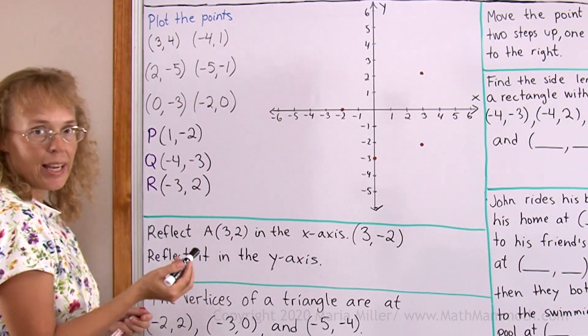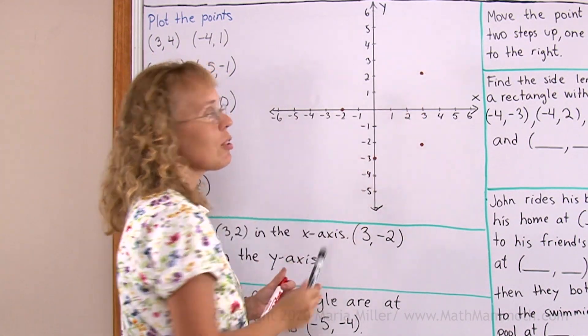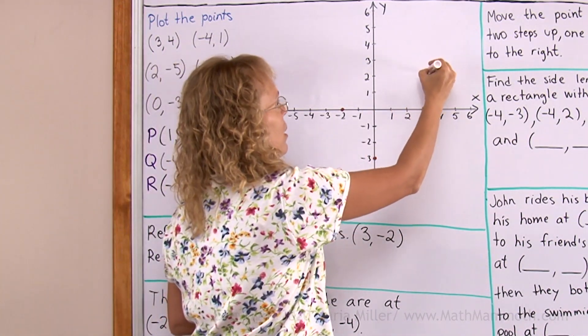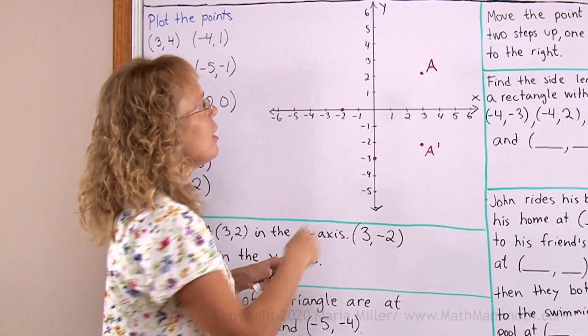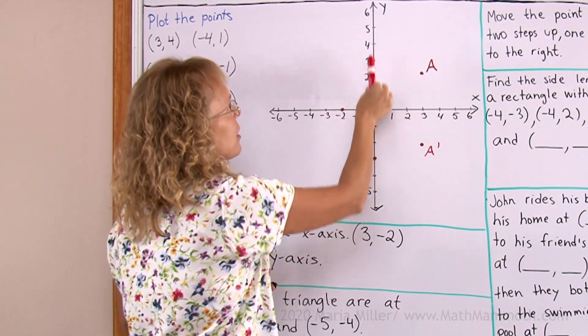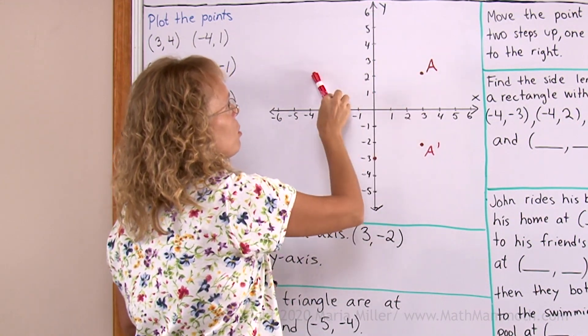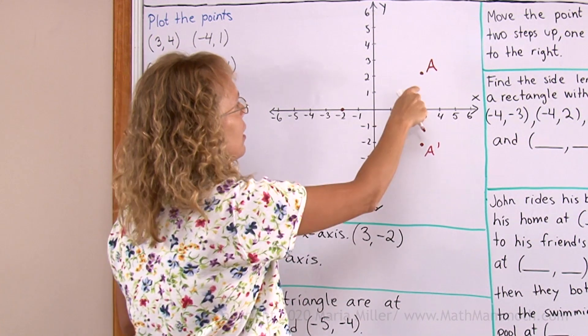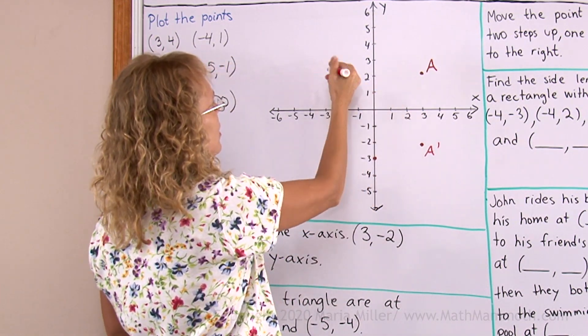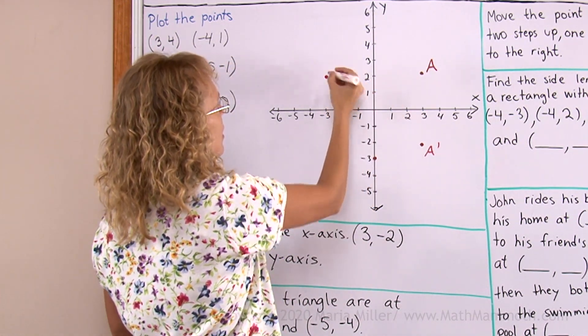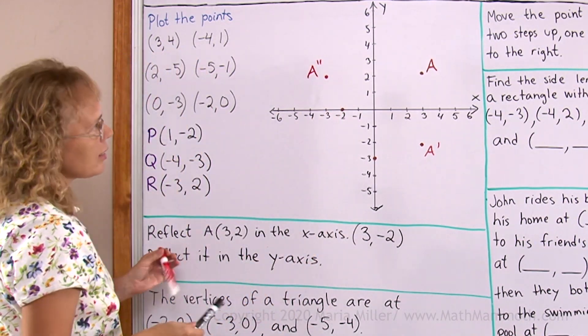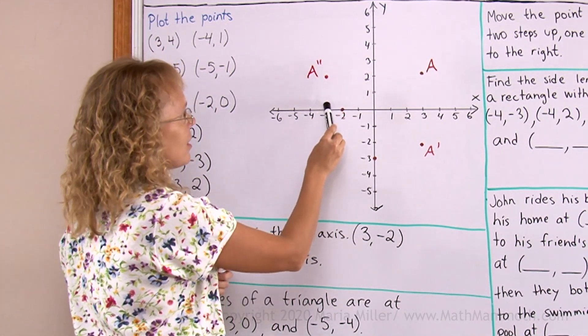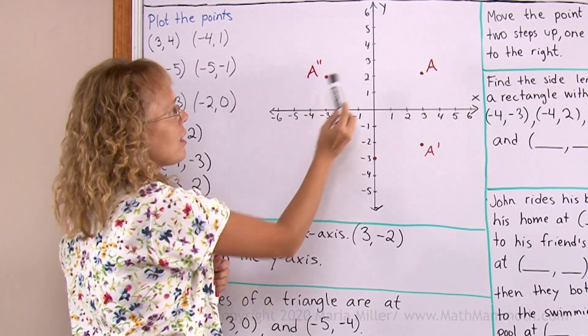Then let's reflect it in the y-axis. This was my original point A. Let me mark it as A and this is A prime. Now I reflect it in this as if this was a mirror. It goes over here on the other side but it goes exactly three units right there. A prime prime. And its coordinates now are x-coordinate is -3 and then 2.